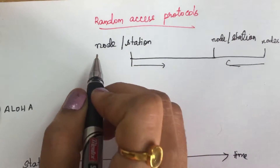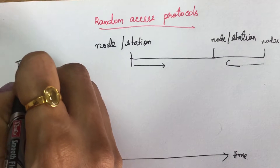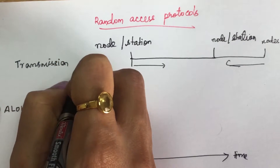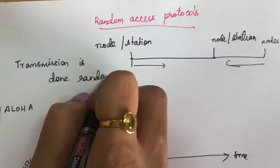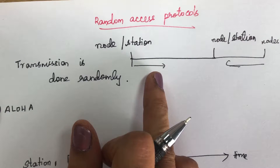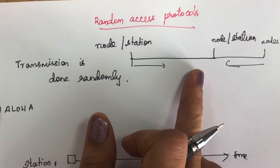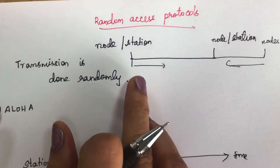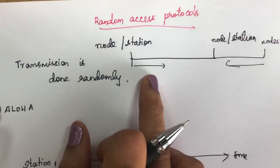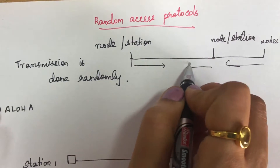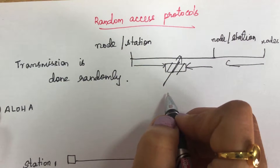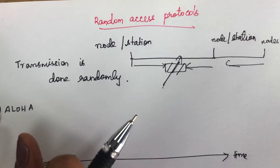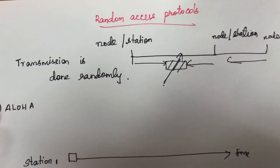In the random access method, transmission is random among the stations. Whenever a station receives data, it will send it at that particular time without waiting for other stations. If at the same time another station is also sending data, a collision occurs and both frames get lost. This is one of the disadvantages of random access protocols, but we will see techniques to avoid collision.